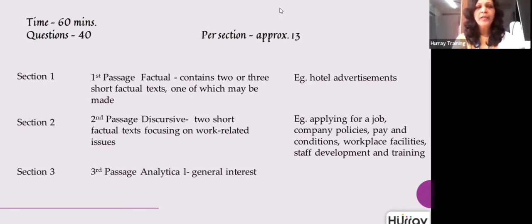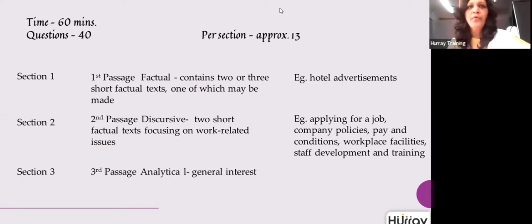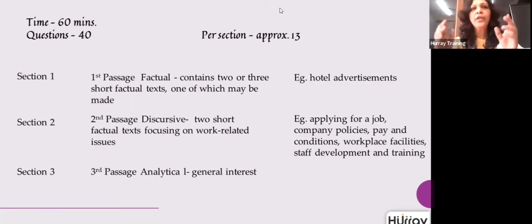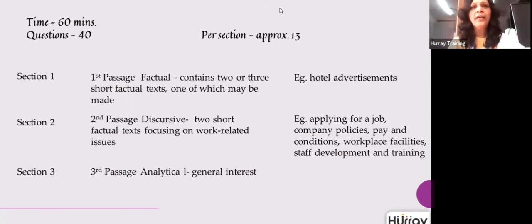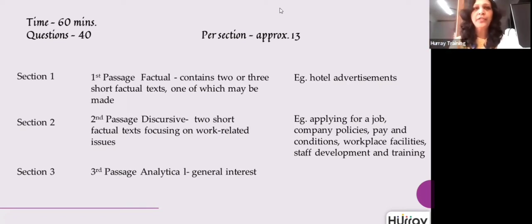For an academic reading test paper, you will have three long passages. It will not be broken down into smaller sections. You will not have smaller articles within one section. Academic reading papers will be written as reading passage one, reading passage two, and reading passage three.